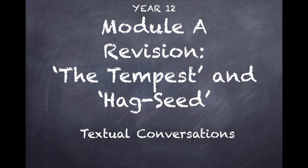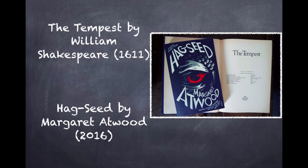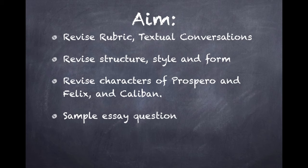This is a revision video made for Module A, Textual Conversations, exploring Shakespeare's 1611 play The Tempest and Margaret Atwood's 2016 novel Hag-Seed. In this video, we'll focus on structure, style and form, as well as revise the comparative character analysis of Prospero and Felix, and of Caliban.